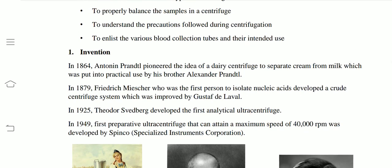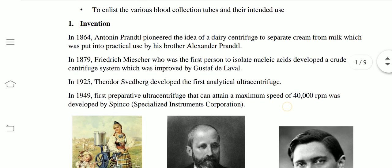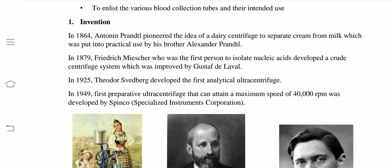In 1864, Antonin Prandtl pioneered the idea of a dairy centrifuge to separate cream from milk. And in 1879, Frédéric Michel, who was the first person to isolate nucleic acid, developed a crude centrifuge system, which was improved by Gustave de Laval. In 1925, Theodore Svedberg developed the first analytical ultracentrifuge.